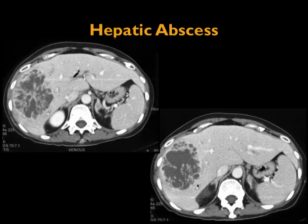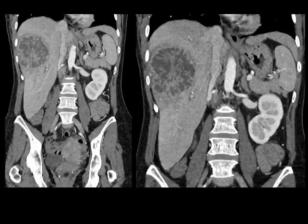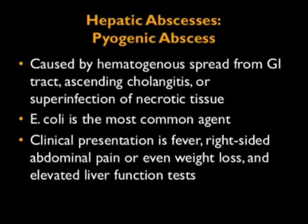Abscesses at presentation can be tricky. I saw a case where a patient was found down — I thought maybe she had a hepatoma or metastasis, but this was biopsied and confirmed as abscess. A pseudo-capsule was present, and I thought for sure it was a hepatoma — it was an E. coli abscess. With pyogenic abscesses, causes include hematogenous spread from the GI tract, ascending cholangitis, and superinfection of necrotic tissues. Clinical presentation is fever, right-sided abdominal pain, weight loss, and elevated LFTs.